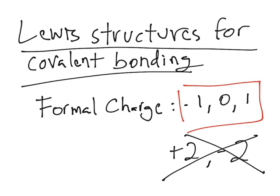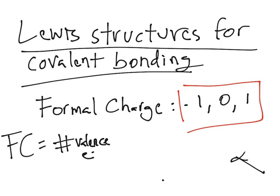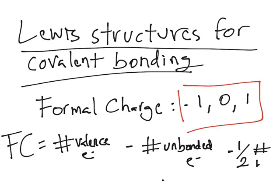The way you calculate the formal charge is simply a formula: it is the number of valence electrons minus the number of unbonded electrons, minus half the number of bonded electrons.